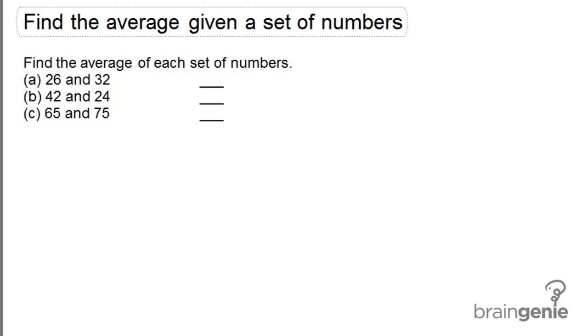Find the average given a set of numbers. Recall that the average of any set of numbers is equal to the sum of the numbers divided by the number of parts. So that's the key formula.